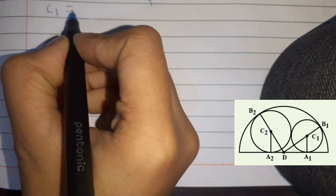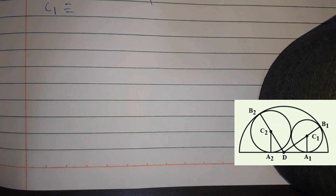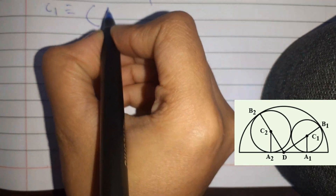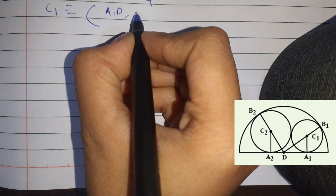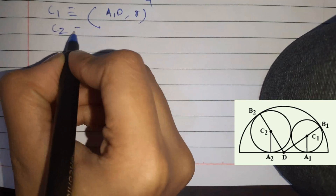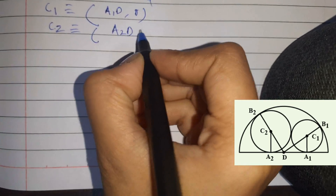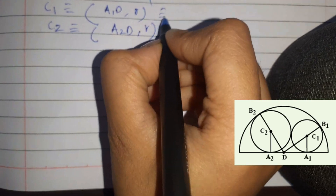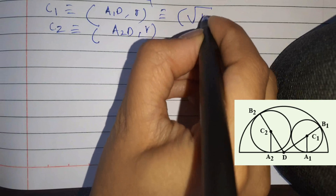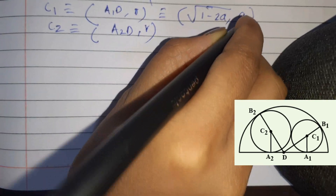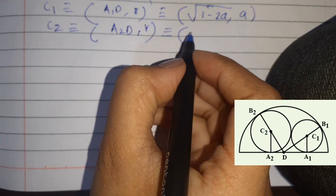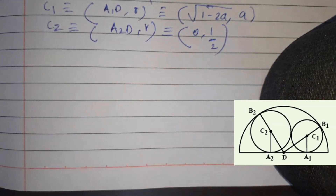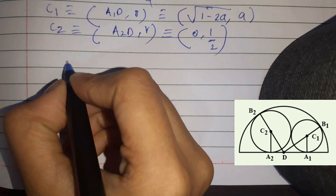Looking at the diagram, the coordinates of center C1 are (A1D, radius) = (√(1 - 2a), a), and the coordinates of center C2 are (A2D, radius) = (0, 1/2).